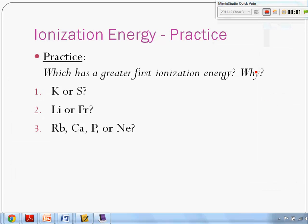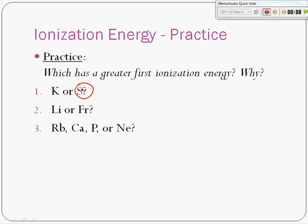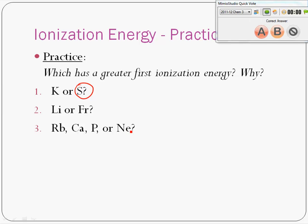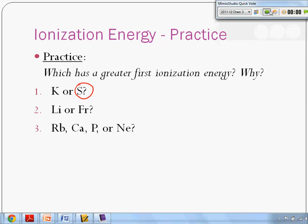What about lithium and francium? Which one has the greater first ionization energy? Francium is on the bottom left. Lithium is smaller — lithium has electrons much closer to the protons. Lithium is going to take more effort to turn into a cation.